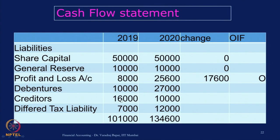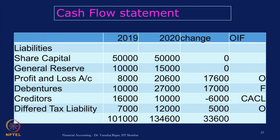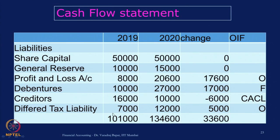Next is creditors. Creditors have gone from 16,000 to 10,000 — a fall of 6,000. It is an operating item related to normal activities of business, specifically a working capital item, so we mark it as CACL. Deferred tax liability has gone up from 7,000 to 12,000 — plus 5,000 — and taxation is an operating item, so I have marked it as O.